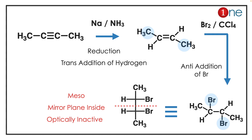In the next step, you are adding bromine in CCl₄, which is an anti-addition. Bromine is added in the trans fashion, giving trans-dibromide. From this you get a meso compound. Meso means there is a mirror plane inside the compound, making it optically inactive. The final product is the meso product — it will be optically inactive.